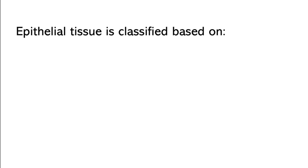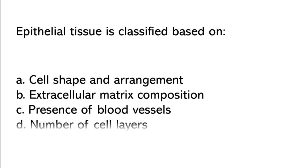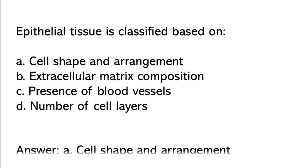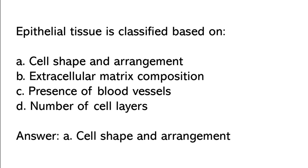Epithelial tissue is classified based on: cell shape and arrangement, extracellular matrix composition, presence of blood vessels, number of cell layers. So the correct answer is option A: Epithelial tissue is classified based on cell shape and arrangement.